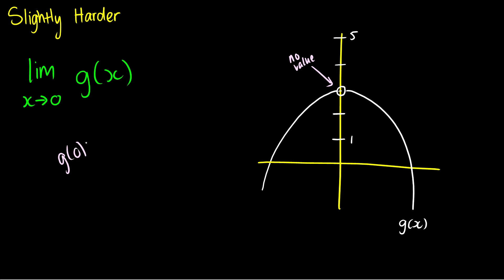If I ask you what's g of 0, you couldn't say anything because it's undefined. However, we can still talk about the limit. If I take an x to the left and move it closer and closer to 0, the curve approaches the value 3. If I take x from the right and move it closer to 0, g of x is also moving closer and closer to 3. So the limit as x goes to 0 of g of x is equal to 3, but g of 0 is not defined. There's a gap in the graph, but because both sides tend to the same point, that is the limit.